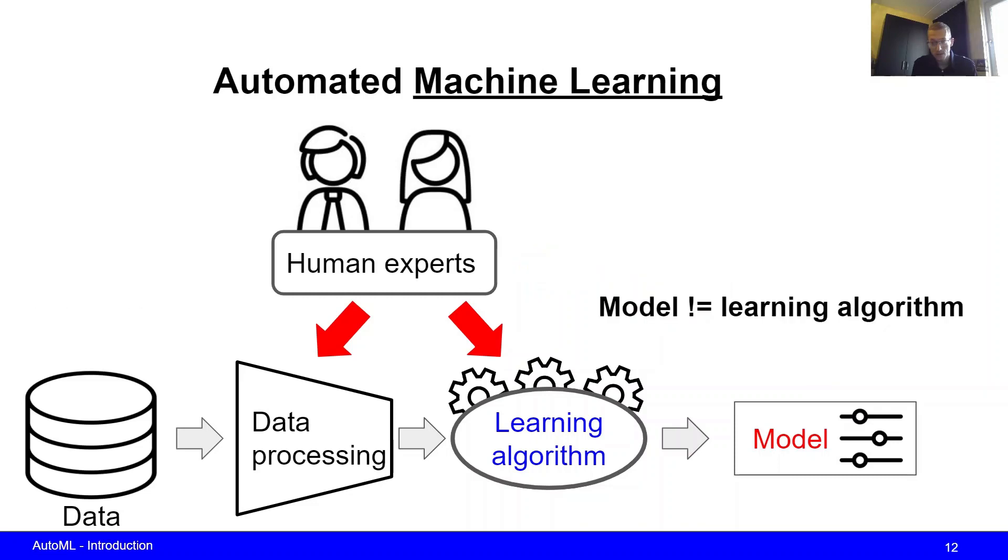First of all, we have to note that the model is not equivalent to a learning algorithm. They are really two distinct things. The learning algorithm takes in preprocessed data and outputs a model. The model is different in the sense that it takes in new inputs and its outputs are predictions for those inputs. The learning algorithm outputs a model whereas the model outputs predictions.